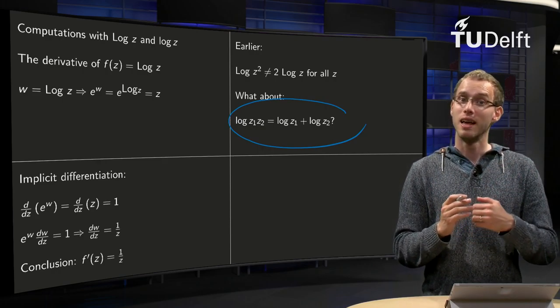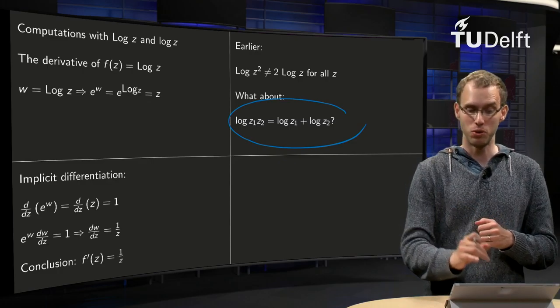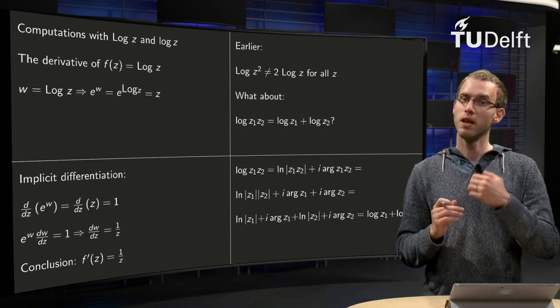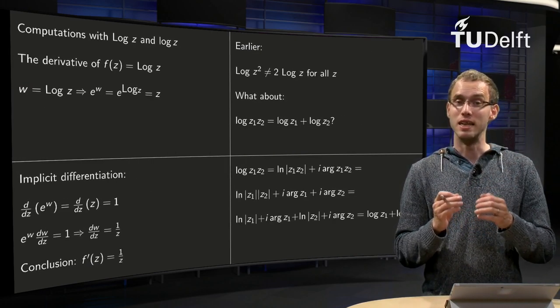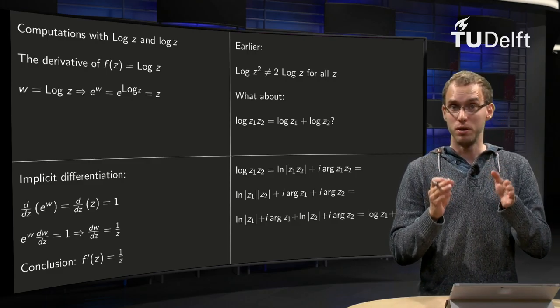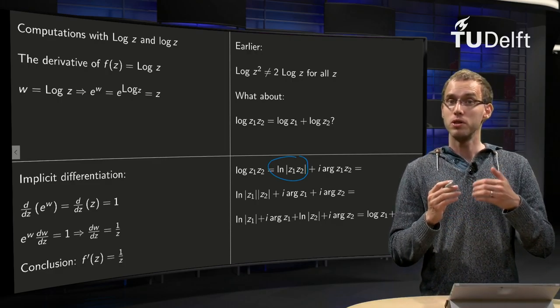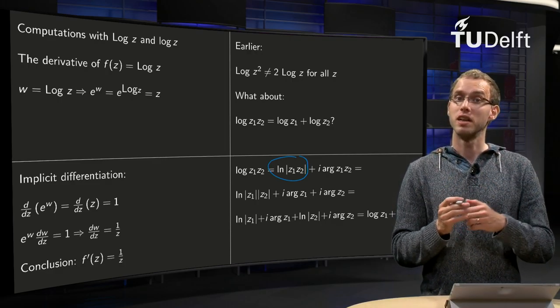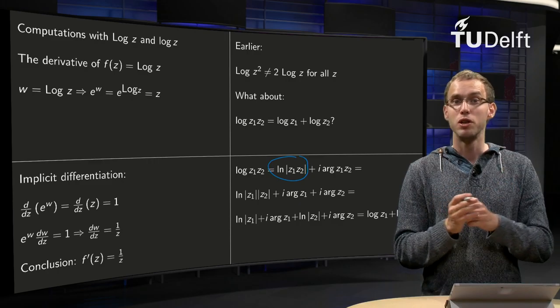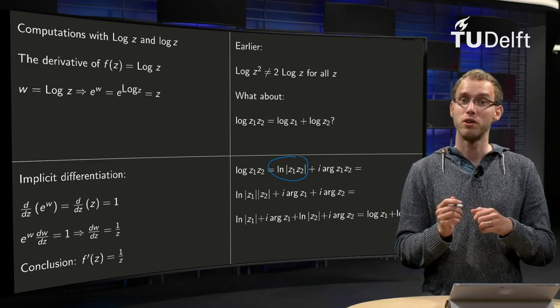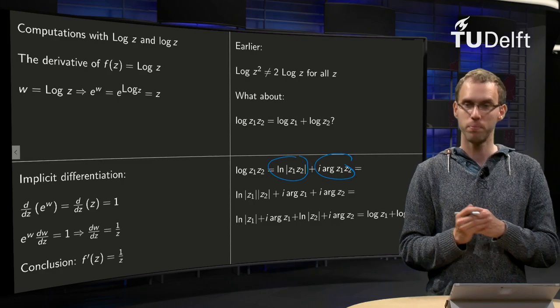So what does this mean, the small log of z1 times z2? The real part is the ln of the modulus of z1 times z2 plus i times the imaginary part, and the imaginary part of the small log is the small arg of z1 times z2.